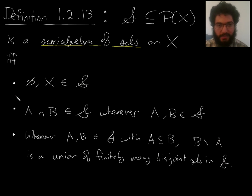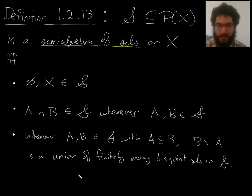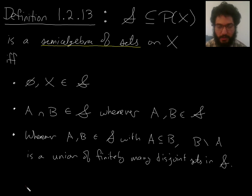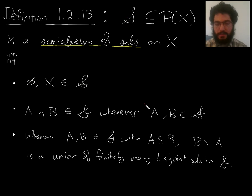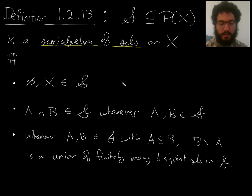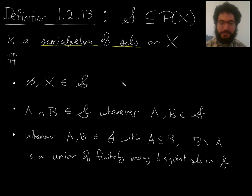The idea is that this definition is rigged so that when you just throw in finite unions — take S and throw in all the finite unions of things in S — you will actually get an algebra of sets. That's something to prove. Today's lecture ran a little over time, so I'll prove next time that if you take a semi-algebra of sets and close it under finite unions, you get an algebra of sets. Then we'll use that fact to discuss extending additive or countably additive functions from semi-algebras to the algebras of sets that they generate.